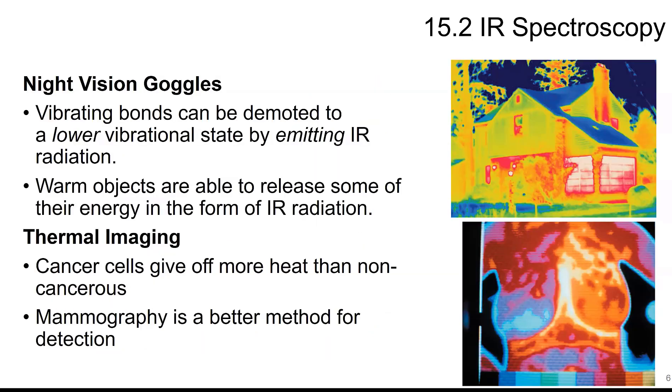Infrared spectroscopy is used with night vision goggles. So you have vibrating bonds that can be demoted to a lower vibrational state, and that emits IR. And warm objects are able to release some of the energy in the form of IR radiation. IR can also be used in thermal imaging. Cancer cells give off more heat than normal non-cancerous cells, so they can use that to image cancer cells, but this is not a great method of detection because there's a lot of errors involved there. So mammography is often a better method for detection.